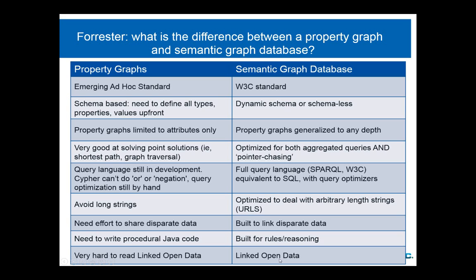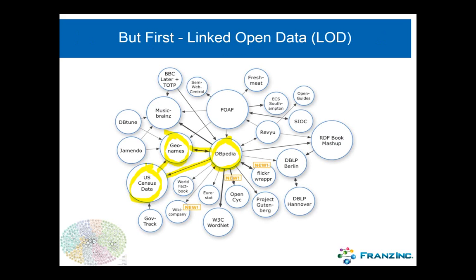A very important point: if you want to read in DBpedia, GeoNames, Freebase, or whatever else from the Linked Open Data Cloud into a regular property graph database, it's very, very hard. Just Google for Linked Open Data and your favorite property graph database, and on the first page you won't find any solutions for how to really do this. Whereas with a semantic graph database, it's obviously all about Linked Open Data. Let me give you a little demo about that.